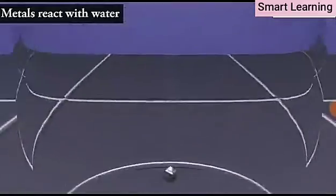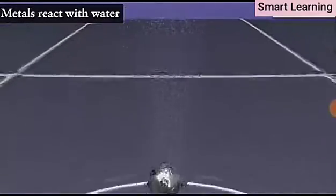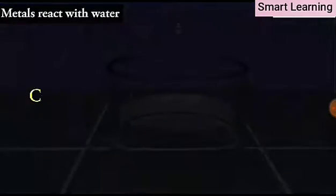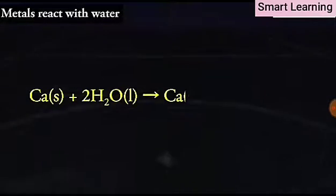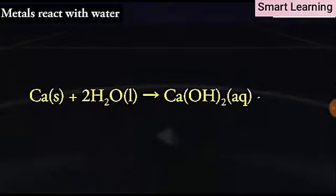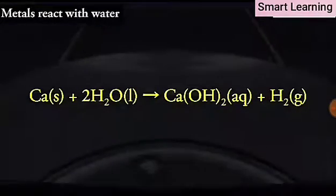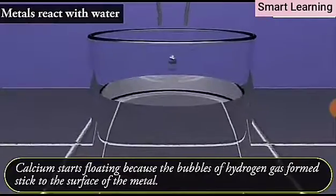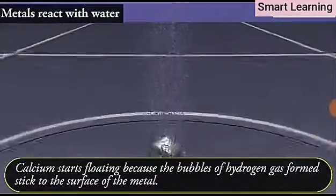The reaction of calcium with water is less violent. The heat evolved is not sufficient for the hydrogen to catch fire. Ca solid plus 2H2O liquid gives Ca(OH)2 aqueous plus H2 gas. Calcium starts floating because the bubbles of hydrogen gas formed stick to the surface of the metal.